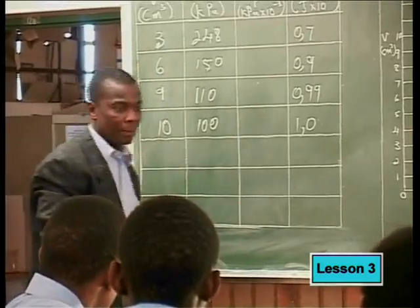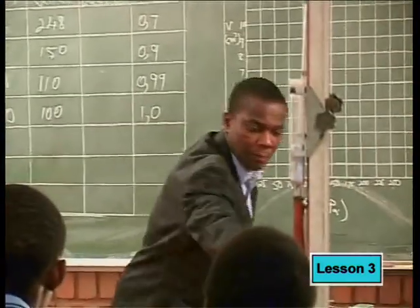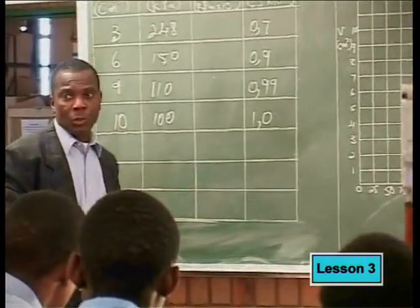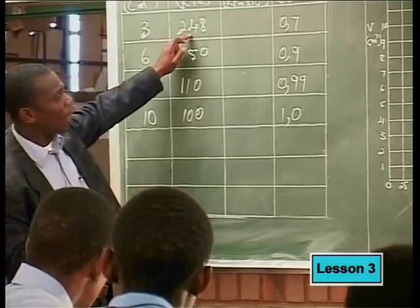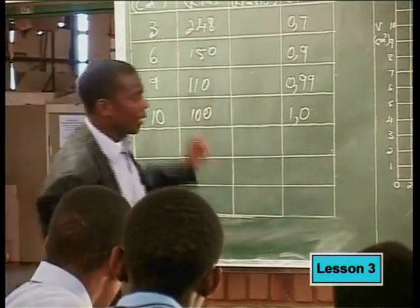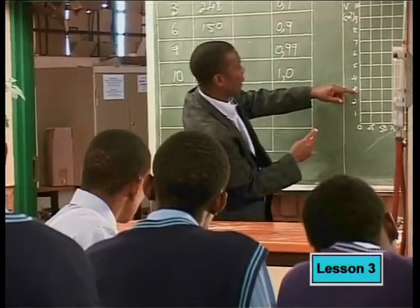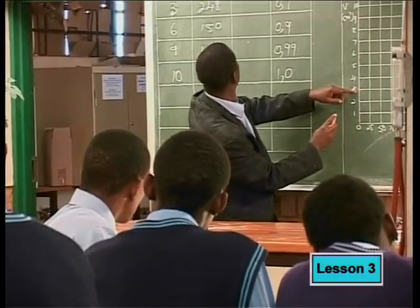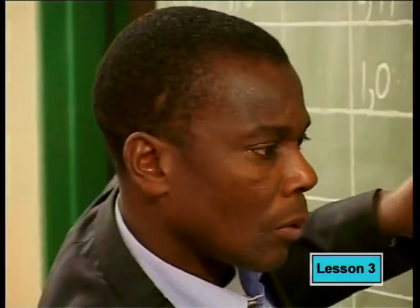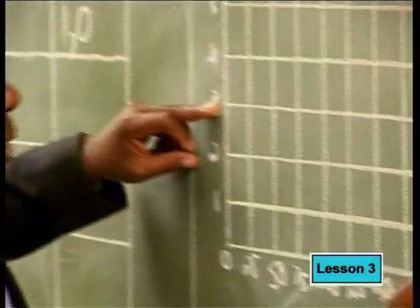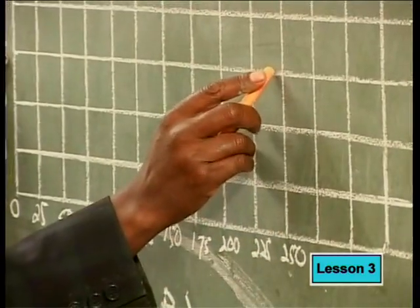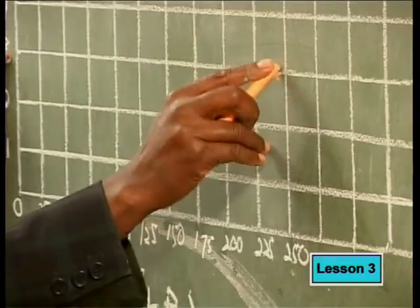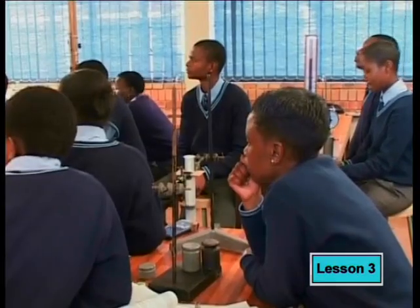Looking at these readings, we are going to plot the points. Three for volume corresponds to 248. According to mine here, I have three for volume and that corresponds to 248. So we have 250 here — I'll estimate it to be somewhere here. That point is marked there for 248.